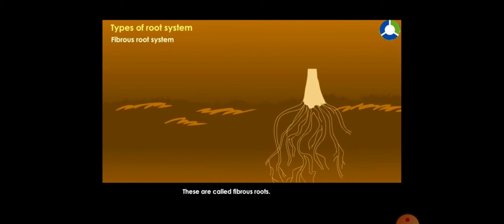These roots spread from a common point and are about the same size. There is no difference between the main roots and branch roots. They spread out in the soil and give firm support to the plants.